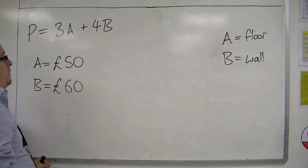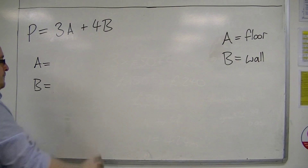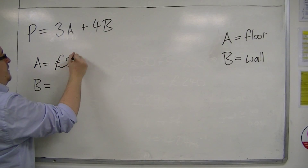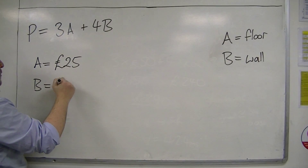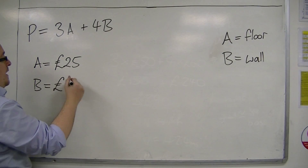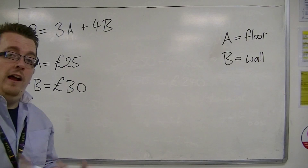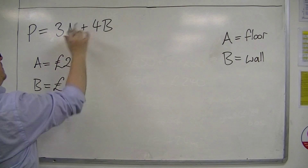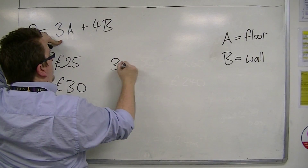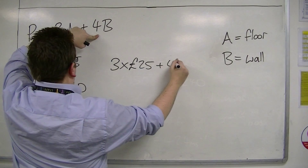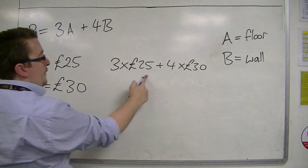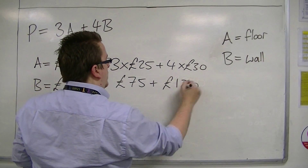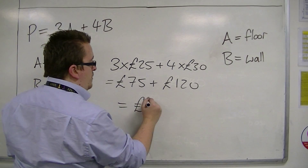That leads on to: let's say he changes his price. He's doing an offer on floors, so they're now £25. And he's doing an offer on walls, and they're now £30. So now how much is he going to charge? We're putting £25 in for A and £30 in for B. So three lots of £25 plus four lots of £30. Three lots of £25 is £75. Four lots of £30 is £120. So together, we're now at £195.